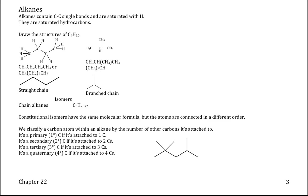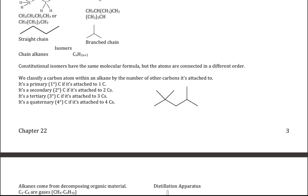We can classify a carbon within an alkane by the number of other carbons it's attached to. A primary carbon (1°) is attached to one other carbon. A secondary carbon (2°) is attached to two carbons. A tertiary carbon (3°) is attached to three carbons. A quaternary carbon (4°) is attached to four carbons. Given the line structure shown, come back and find the quaternary, tertiary, secondary, and primary carbons.